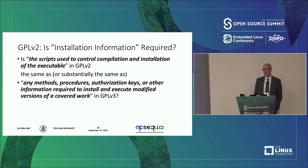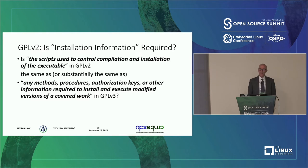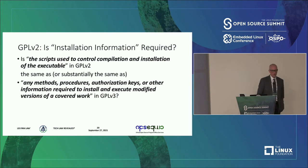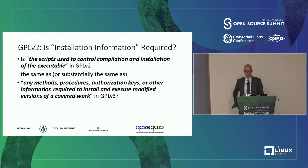So there is a question: GPL v2 says you have to provide the scripts used to control compilation and installation of an executable. Is that the same thing as what GPL v3 requires, which is any methods, procedures, authorization keys, or other information required to install and execute modified versions of a covered work? That's the interesting debate going on right now.